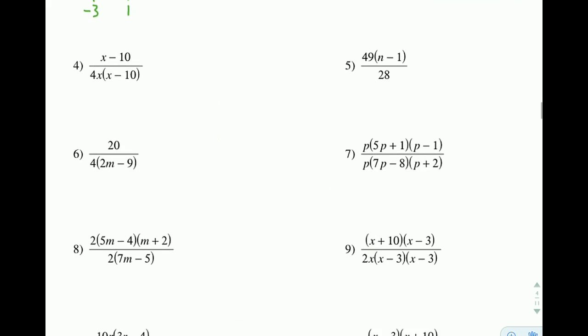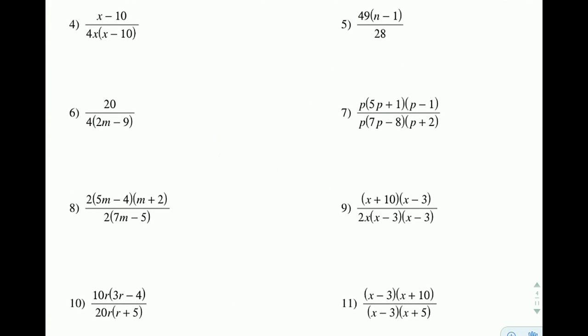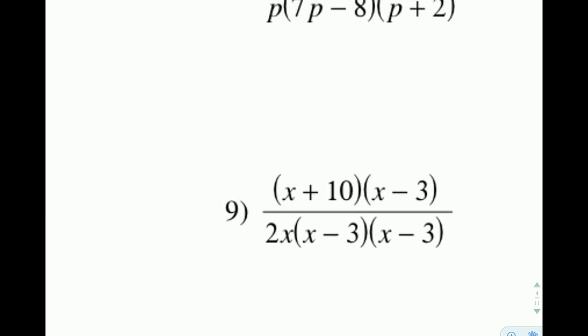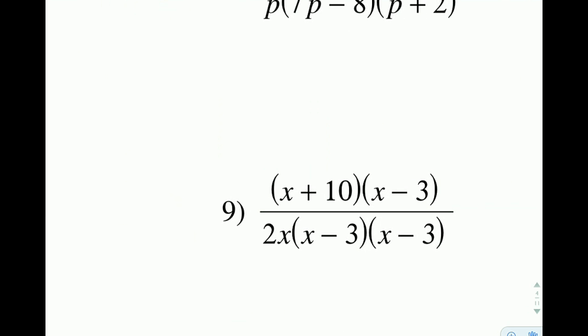One more example of one that we could go over real quick would be looking at this one right here, number 9. On top and bottom, we see that we have an x minus 3 and an x minus 3. So that entire group, I can cancel out one of them down to 1, reduce it down to 1. You'll notice that I also have an x plus 10 and a 2x and an x minus 3 all remaining.